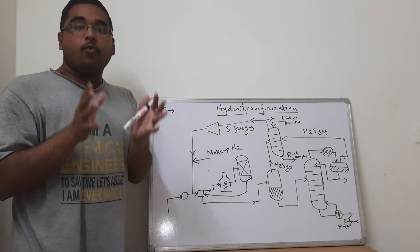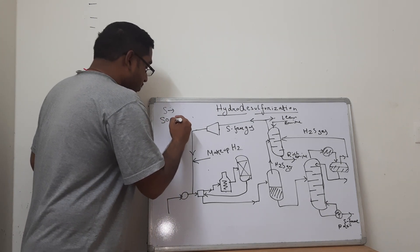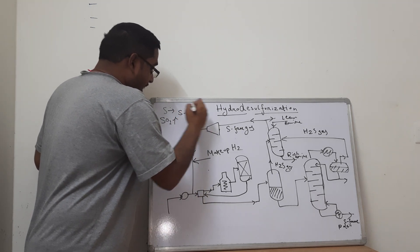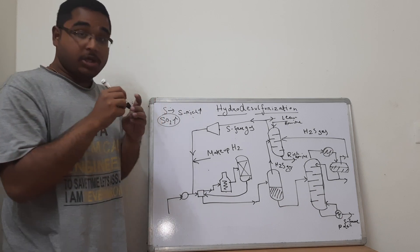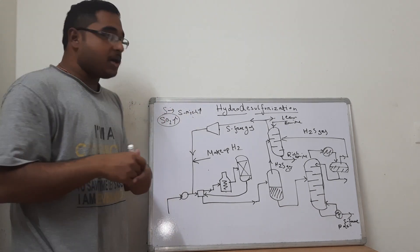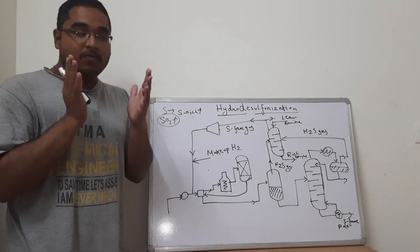The more is the sulfur in the fuel in itself, the more will be the emission of SO2. So a sulfur rich compound will have a higher SO2 emission than a sulfur poor compound or a sulfur free product.